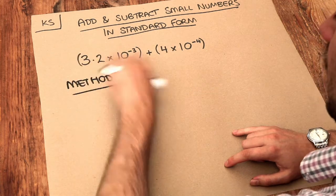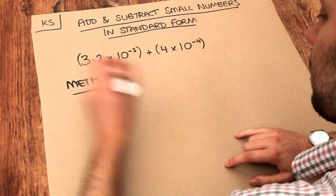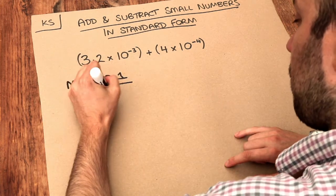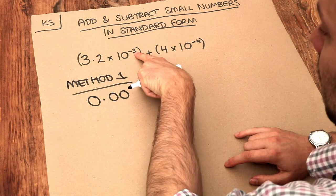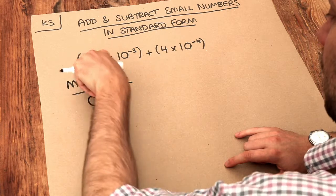If we convert this to a normal number, do you remember the trick was the number of zeros, including the one before the decimal point, has to be the same as that number there. So we've got three zeros and then three, two.